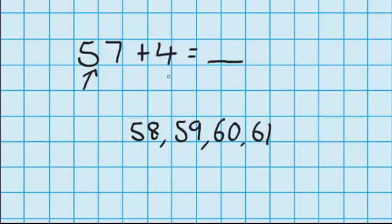So let's just check I needed to take 4 jumps. Let's just check that I did. 1, 2, 3, 4. Perfect. So 57 plus 4 equals 61.